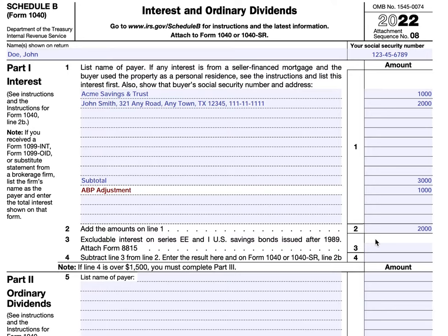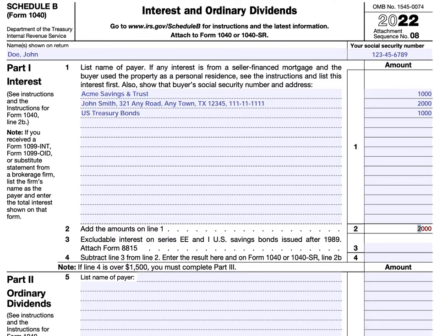If you qualify and complete IRS Form 8815, you would include that amount of interest on line three. For example, if you had a total of $4,000 but $1,000 of it was excludable, you would attach your completed Form 8815, back that out, and you would have $3,000 of reportable interest.